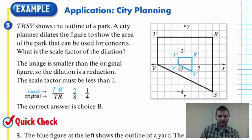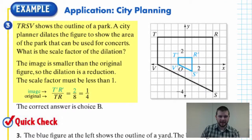And here's an application, example three: TRSV shows the outline of a park. A city planner dilates the figure to show the area of the park that can be used for concerts. What is the scale factor of the dilation?